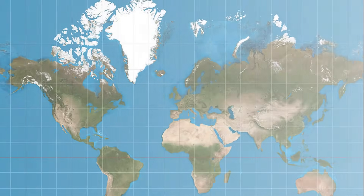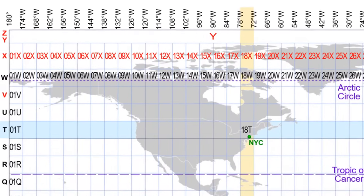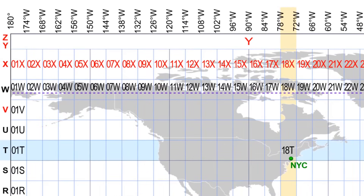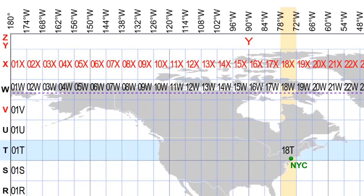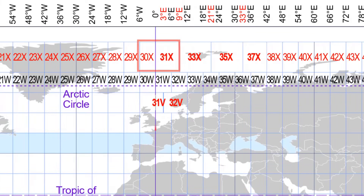Zones are numbered from 1 to 60 starting at 180 degrees longitude and increasing eastward. Therefore, zone 1 is from 180 degrees West to 174 degrees West. Please note, the zero longitude line or the prime meridian is not the start of a zone number — it falls between zone 30 and zone 31.